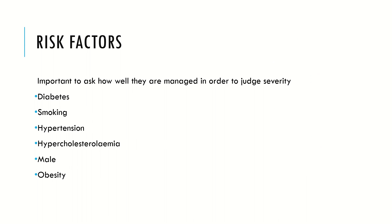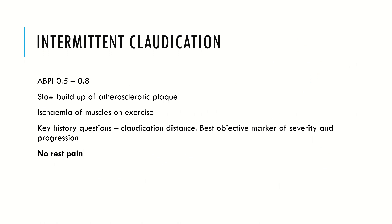Intermittent claudication is when you have an ABPI of between 0.5 and 0.8. This is the slow buildup of an atherosclerotic plaque in one of the vessels in the leg, and it presents as ischemia of the muscles on exercise. You have the claudication distance, which is the best objective marker of severity and progression. You ask the patient how far they can walk before getting ischemic pain in their calf. If they could previously walk 200 yards and now can only walk 50, the disease is progressing. Most importantly, there is no rest pain — it resolves on stopping exercise after a few minutes.